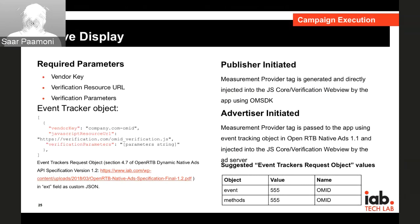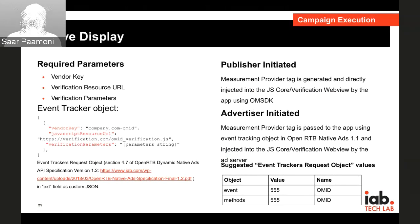Taking a deep dive into native display: the three parameters on the top left side are needed in any execution. A vendor key is a string that identifies the measurement vendor. The verification resource URL is the base URL for the measurement tag. The verification parameters are basically a set of IDs representing the client, the advertiser, publisher, and campaign IDs — provided by the measurement provider.